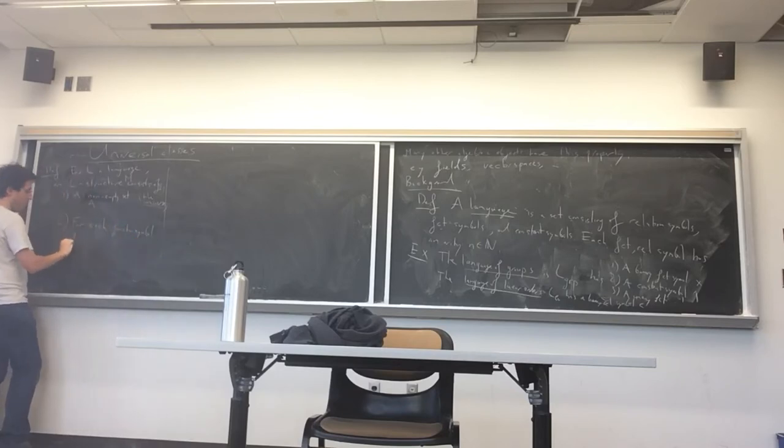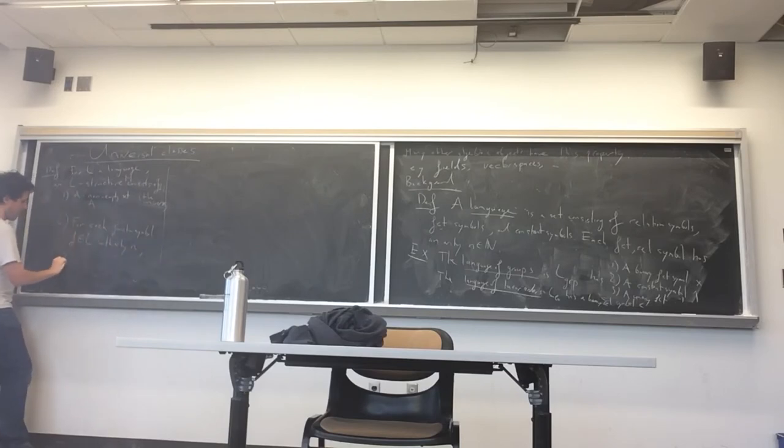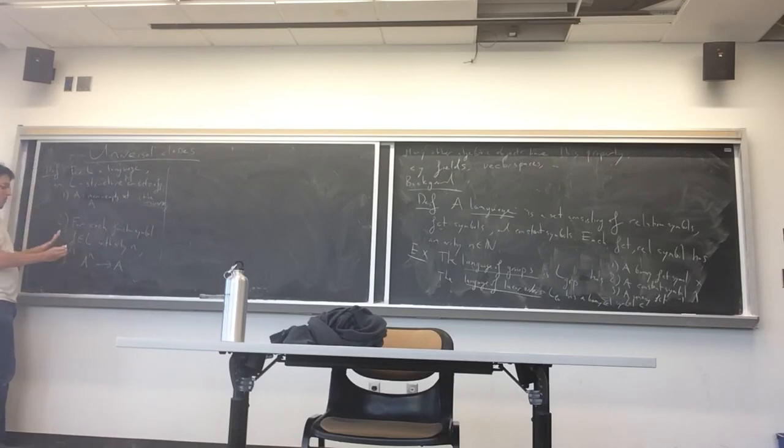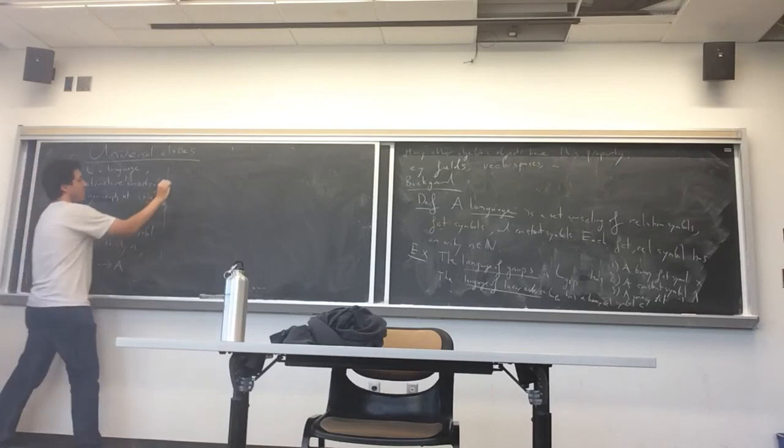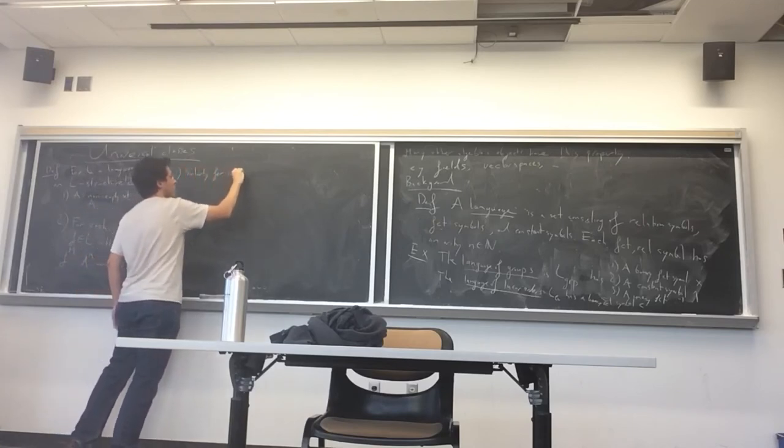So for each function symbol f in the language, let's say it has arity n, I will specify some interpretation f^M which will send n-tuples in A to A. So A^n to A. So in the case of groups this would be a multiplication function, n would be equal to 2. And similarly for the others. So similarly for constant symbols and relation symbols.